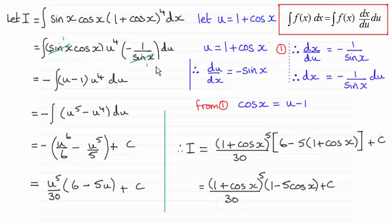But for cos x, we can get cos x from this equation here, and that's going to be equal to u minus 1, which I've substituted in here.